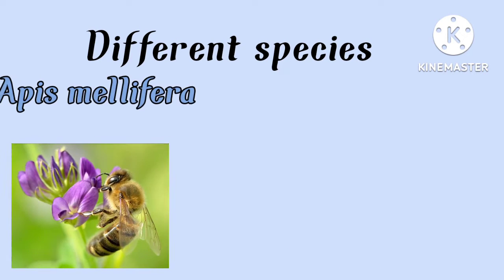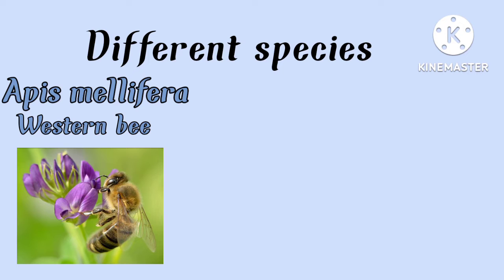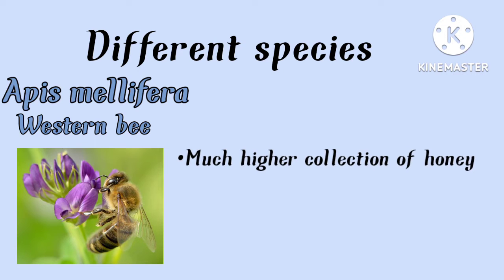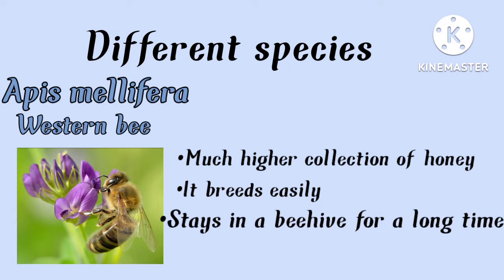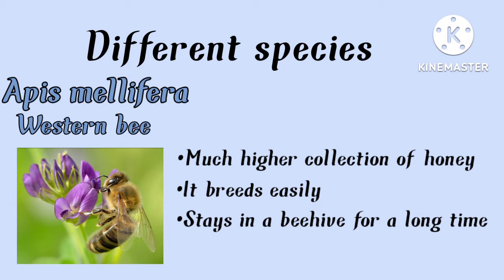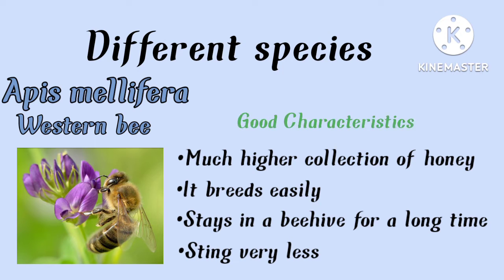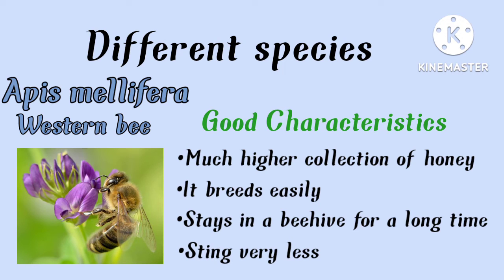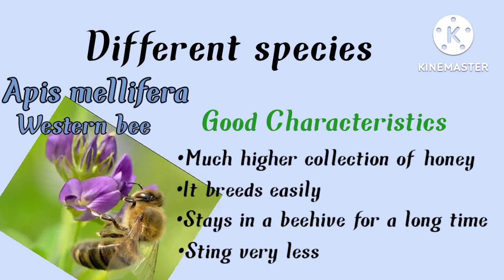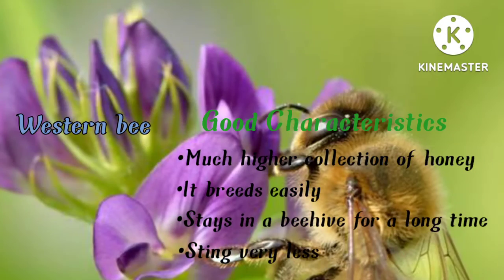Bees are also of different species. The Apis mellifera, or the western bee, comes from Italy. For Indian farmers, the western bee has much higher honey collection. It breeds easily, stays in a particular beehive for a longer period of time, and it stings very less. These are all the important characteristics we want to have for our bees, and the western bee, Apis mellifera, has them.